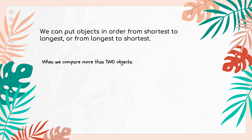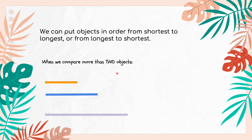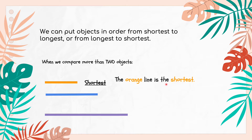Now what do we do when we compare more than two objects? What terms are we going to use to describe the length of those objects? We are comparing more than two objects here. We have an orange line, a blue line, and a purple line. We use the word shortest — instead of adding 'er' at the end of short, we add 'est'. The orange line is shortest because we have three lines to compare, so we cannot use the term shorter. Instead we use shortest.